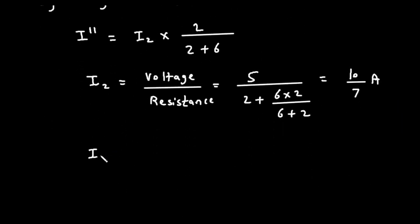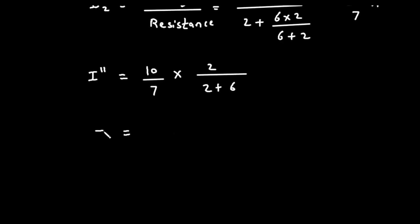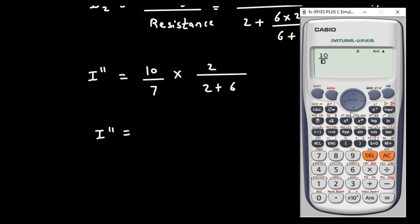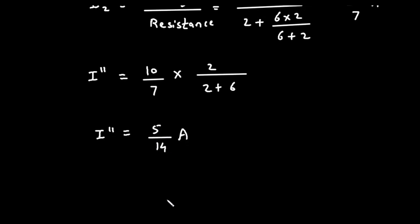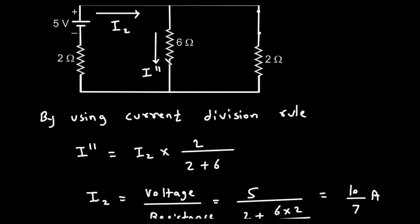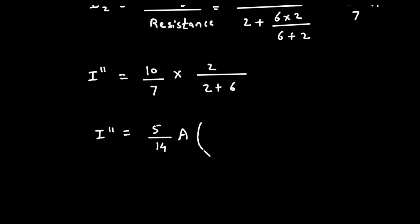Now let's put this value into the current division formula to get I double prime. I double prime equals (10/7) multiplied by 2 divided by (2 + 6), which gives 5/14 ampere. The direction of this current is downward.